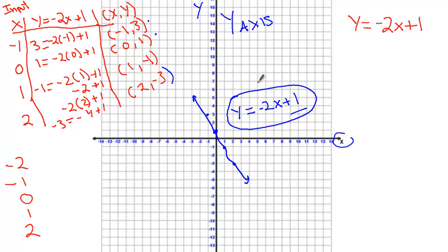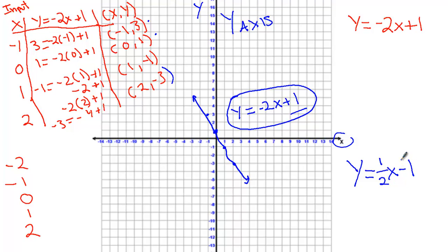Let's look at the 'Got It' problem they give us. I'm going to leave the previous example up for a few minutes so you can try it yourself. The 'Got It' is y equals one-half x minus 1. Go ahead and pause the video for a few moments, then come back and we'll work through it together. I'll also do an example problem a little bit later.